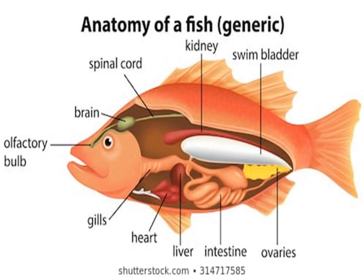As shown in the diagram, the swim bladder of a fish is usually present between the gut and the kidneys. You can see the kidney and the gut or alimentary tract of the fish — the swim bladder lies in between these two structures.